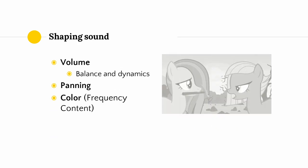To start off with the very basics, we're going to talk about three aspects of our sound that we commonly adjust during mixing. These are volume — which also involves balance and dynamics — panning, and color, or frequency content.